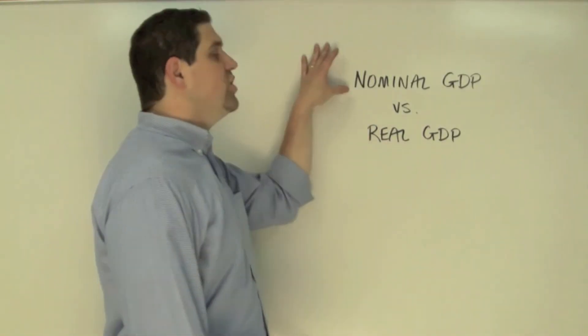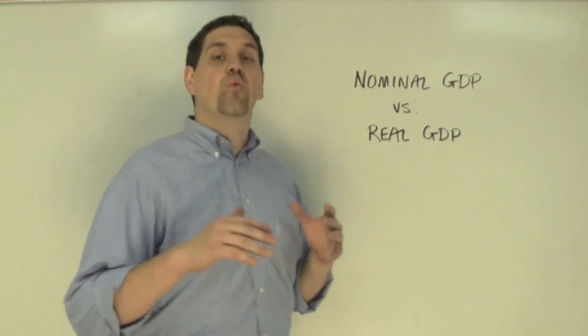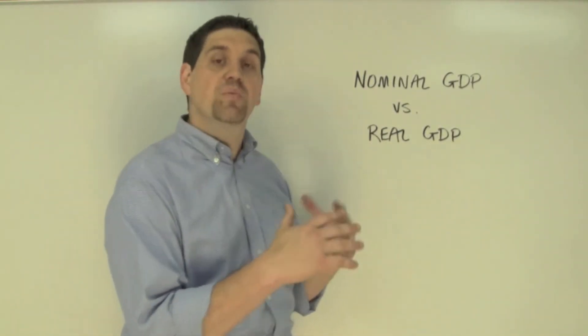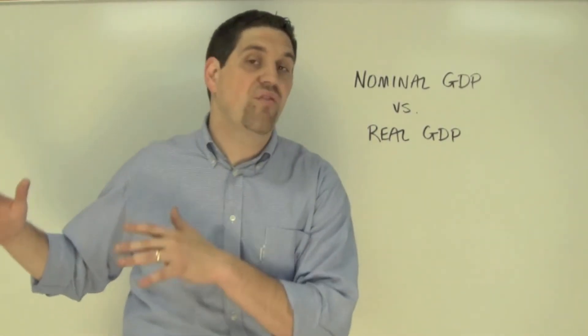So back to the question. If the nominal GDP is positive, then either the real GDP had to increase and we produced more stuff, or prices went up and we had more inflation.